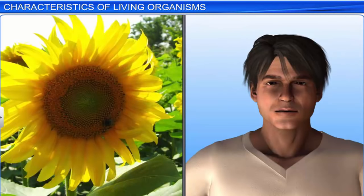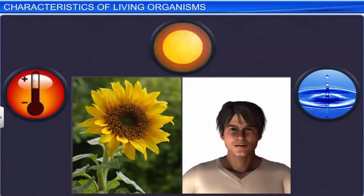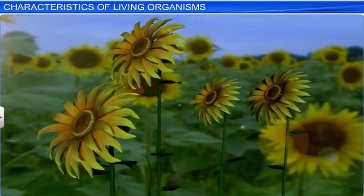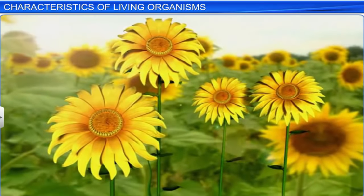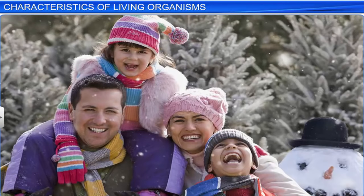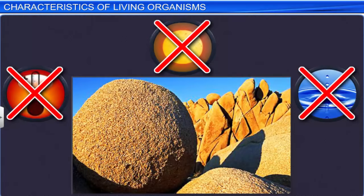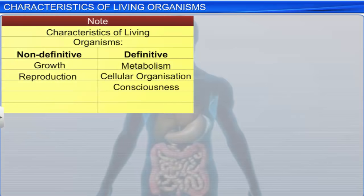Consciousness is another feature associated with living organisms. We know that all living organisms sense and respond to environmental stimuli, such as light, water, and temperature. For instance, a sunflower always faces the sun. Humans too respond to environmental stimuli, and are aware of their surroundings and themselves. For instance, in winters, they wear woolens to keep their bodies warm. Non-living objects don't respond to external stimuli. Consciousness is, therefore, another definitive characteristic of a living being.